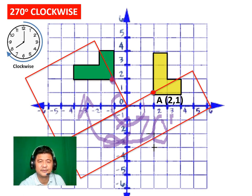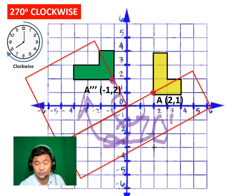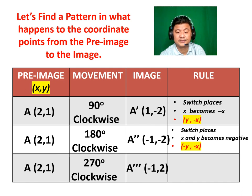Check this out — it went that way. The new points will be — I'm using triple prime now — (negative 1, 2). Let's write that down in our table. Now let's write our results in the table once again. The pre-image is (2, 1). The next image became (negative 1, 2). What have you observed?